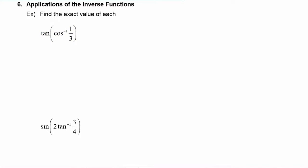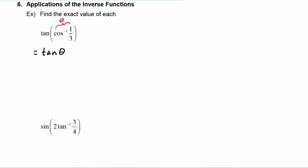Remember that what comes out of an inverse function is an angle. So what this problem is really asking us to do is find the tangent of an angle theta. Now let's think about what we know about theta. If theta is the cosine inverse of one-third, then that means that the cosine of theta equals one-third.